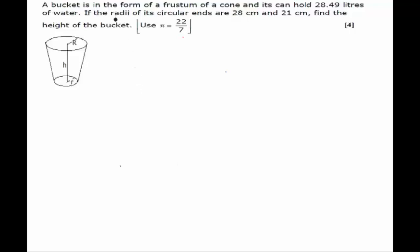Hello students, in this example we have been given a bucket which is in the form of a frustum of a cone and it can hold 28.49 liters of water. The radii of the circular ends are 28 centimeters and 21 centimeters. We have to find the height of the bucket, denoted by h.